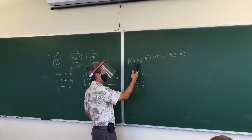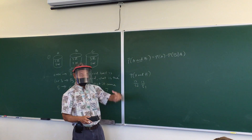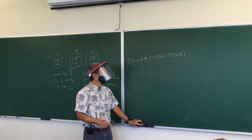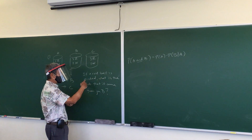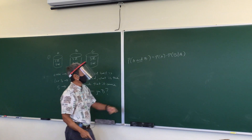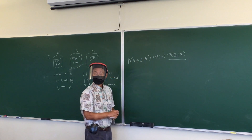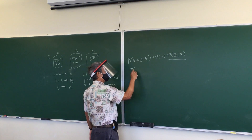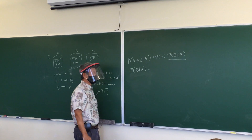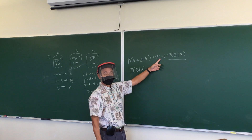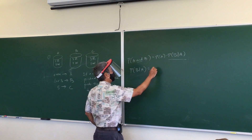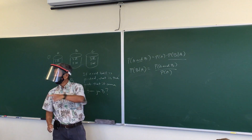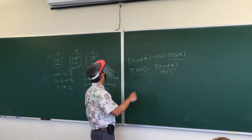So the probability of event A and event B occurring equals the probability of A times the probability of B knowing that A already occurred. If we rearrange this formula, the probability of B given A equals the probability of A and B divided by the probability of A. This is what you're going to use on every problem tonight. This is called conditional probability.